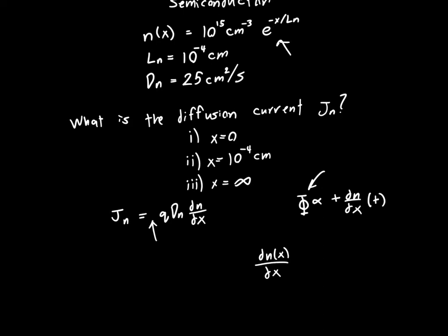And I'm going to rewrite n of x just real quick as some constant n-naught times e to the minus x over Ln, just so that we can have everything as symbols until the very end and then we can plug in all the numbers. And n-naught is just 10 to the 15 per centimeter cubed.